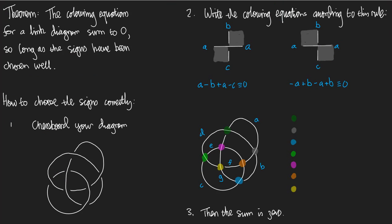It's a general theorem: the colouring equations for a link diagram sum to zero, so long as the signs have been chosen well. The theorem works out the correct way to choose all the signs so that you do get a sum of zero. This isn't a full proof of the theorem, but the recipe and explanation I'm going to give you convey the idea of the proof. If you want the full proof, go to the notes.